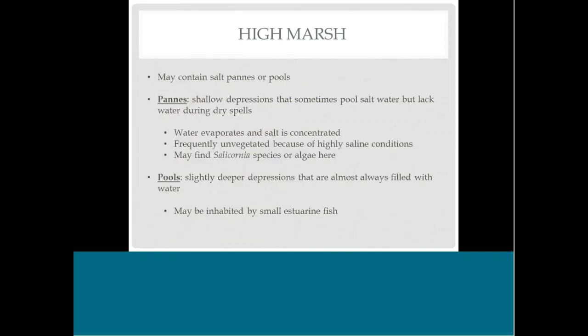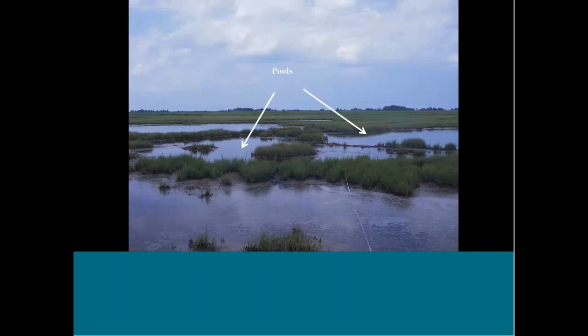Other features within a high marsh include salt pans or pools. Salt pans are shallow depressions that collect water, but during drier spells they dry out and salt becomes very concentrated, so little to no vegetation can grow there — with the exception of maybe some Salicornia species or certain algae. Pools are similar to pans but deeper and usually filled with water, and may even have small fish living in them.